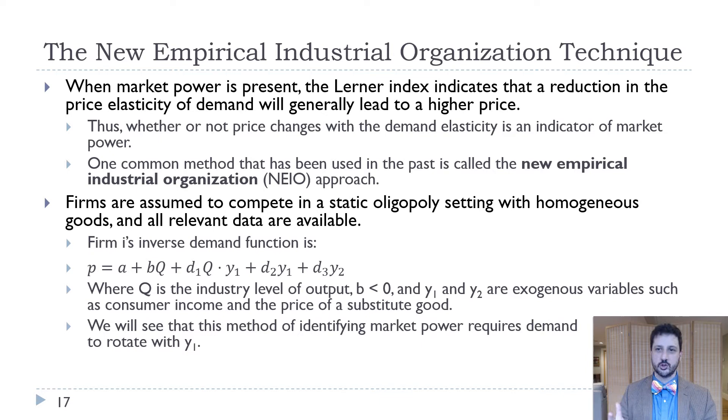The newer technique is referred to as the new empirical industrial organization technique. And if I've said it once, I've said it many times, economists should never be allowed to name anything. But there you go. We call it the new empirical industrial organization approach or NEIO. Basically, it's an econometric technique for thinking about market power in an oligopoly setting. We start with an inverse demand function. We're going to estimate this inverse demand function: P equals A plus BQ plus D1Q times Y1 plus D2Y1 plus D3Y2, where Q is industry level of output, and Y1 and Y2 are exogenous variables such as consumer income and the price of a substitute good.